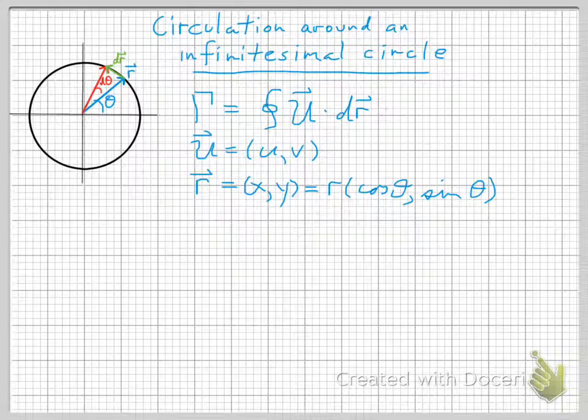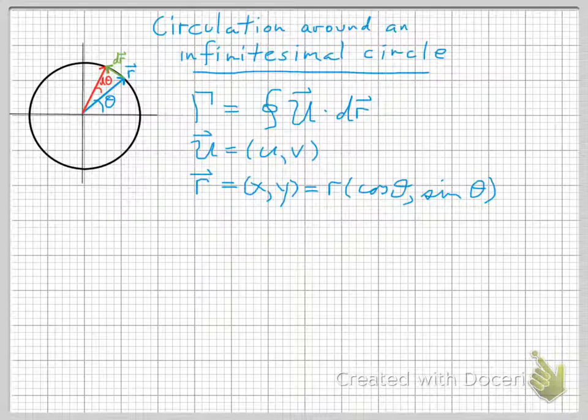Here we're going to calculate the circulation around an infinitesimal circle. Circulation is this quantity gamma right here.